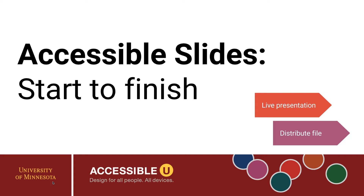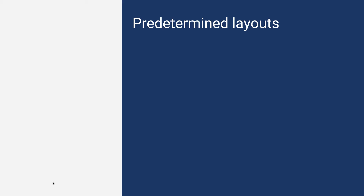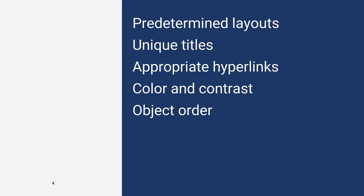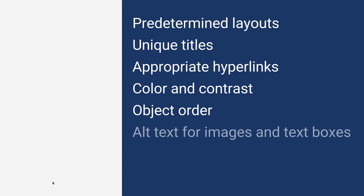The major considerations for accessible slide decks are predetermined layouts, unique titles, appropriate hyperlinks, color and contrast, object order, and alt text for both images and text boxes. These considerations can affect how your audience members who use adaptive technologies like screen readers will be able to read and interact with your slides later on after your live presentation is over.